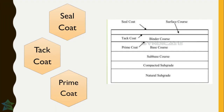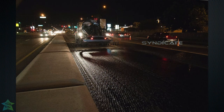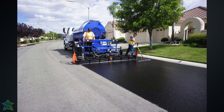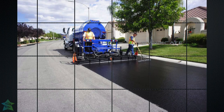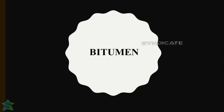As shown in the figure, there are actually three types of coats applied in the flexible pavement. Prime coat is applied between the base course and the binder course. Tack coat is applied between the binder course and the surface course. Seal coat is applied as a waterproof layer over the surface course. These three coats are applied as thin layers of bitumen.